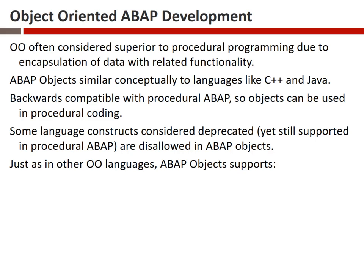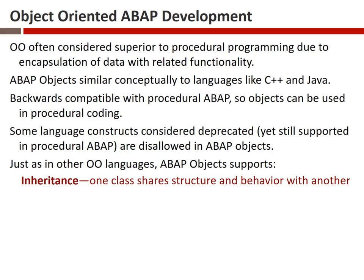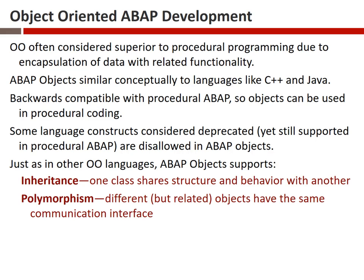Just as in other object-oriented languages, ABAP objects supports inheritance, so we can build a tree-type structure where one class inherits behaviors and structures from another class. We won't get to that today, but we will discuss it as we continue. ABAP objects also supports polymorphism, which is the idea that different but related objects all share the same communication interface.